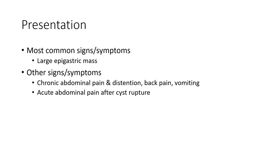The most common sign and symptom is a large epigastric mass. Other signs and symptoms include chronic abdominal pain and distension, back pain, vomiting, axial abdominal pain, and symptoms after cyst rupture.